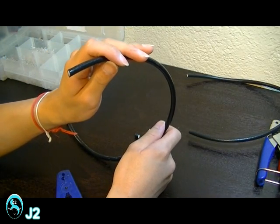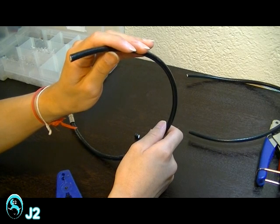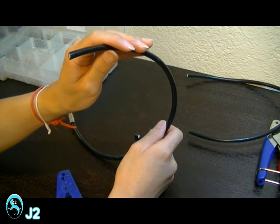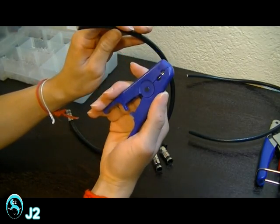Here I got an RG6 coax cable and I'm going to strip 1/4 inch through the outer jacket, braiding, shielding, and plastic insulation, leaving only the copper conductor with the coax cable stripper right here.